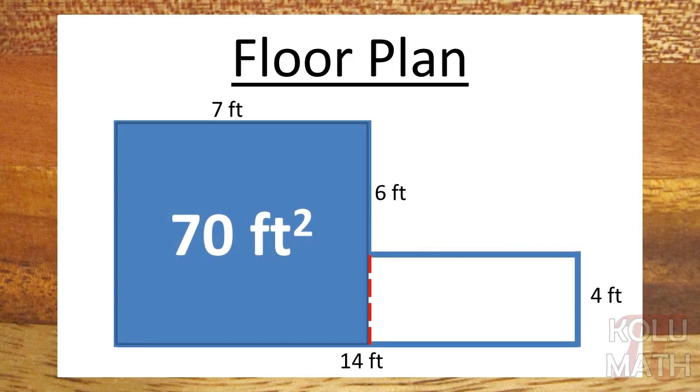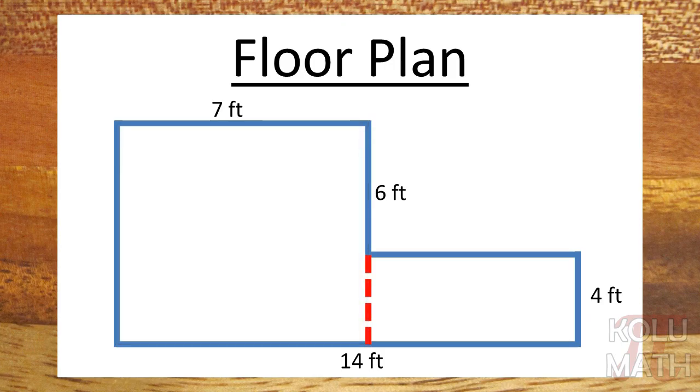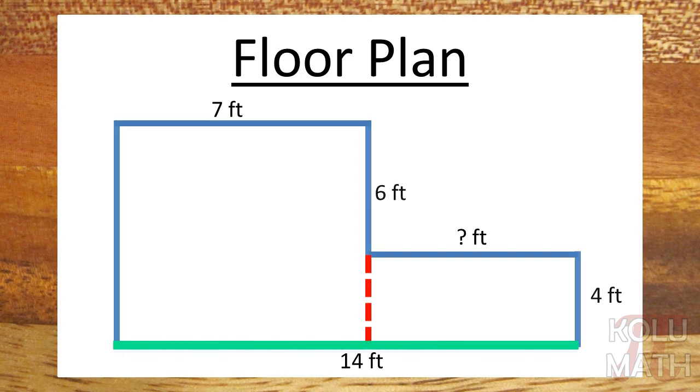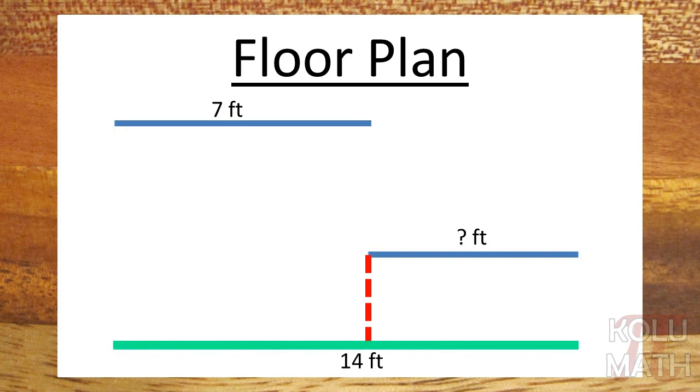So on the right-hand side, we've got another rectangle. We know its height is 4, but we don't know anything about its width. So we've got this side on the bottom here that's 14 feet long, all right? We also have the side up top that's 7 feet long.